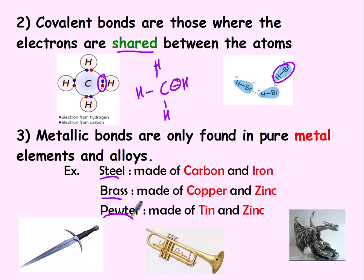You don't have to know what alloys are made out of, but they're going to be made up of mostly a metal and some either non-metal or another metal — so a mixture of substances, but the majority is going to be a metal. Metallic bonds apply to a pure metal or an alloy.